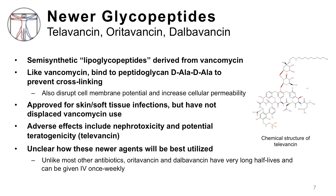Newer glycopeptides include drugs like telavancin, oritavancin, and dalbavancin. In your reading, you might see that these are referred to as lipoglycopeptides and grouped under a separate antibiotic class from the glycopeptides. However, for the purposes of this video overview, they are grouped together with vancomycin as newer glycopeptides.